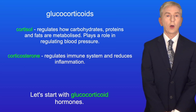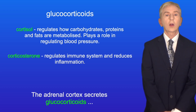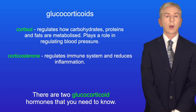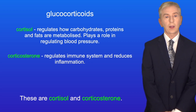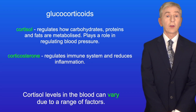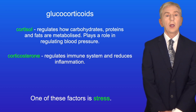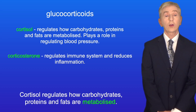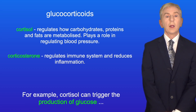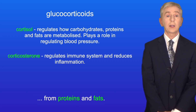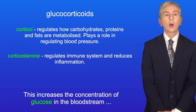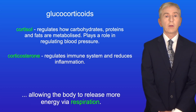Let's start with glucocorticoid hormones. The adrenal cortex secretes glucocorticoids in response to signals from the hypothalamus and the pituitary gland, and there are two glucocorticoid hormones that you need to know: cortisol and corticosterone. Cortisol levels in the blood can vary due to a range of factors, and one of these factors is stress. Stressful events cause the level of cortisol to increase. Cortisol regulates how carbohydrates, proteins, and fats are metabolized. For example, cortisol can trigger the production of glucose from proteins and fats — scientists call this gluconeogenesis. This increases the concentration of glucose in the bloodstream, allowing the body to release more energy via respiration.